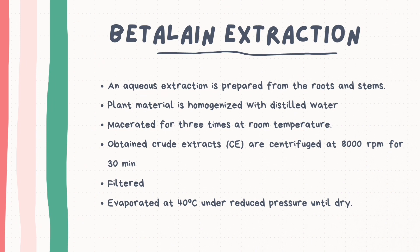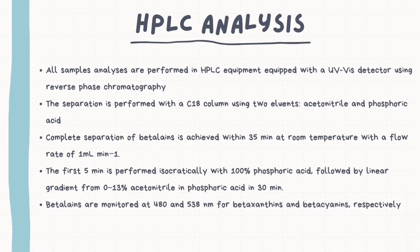Third is the HPLC analysis — all sample analyses are performed using HPLC equipped with a UV-VIS detector using reverse phase chromatography with a C18 column, using two eluents: acetonitrile and phosphoric acid. Complete separation of beta-lains is achieved within 35 minutes at room temperature with a flow rate of 1 mL per minute. The first 5 minutes is performed isocratically with 100% phosphoric acid, followed by a linear gradient from 0 to 30% acetonitrile in phosphoric acid over 30 minutes. Beta-lains are monitored at 480 nm for betaxanthins and 538 nm for betacyanins.